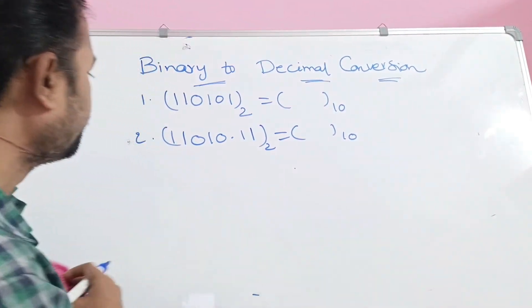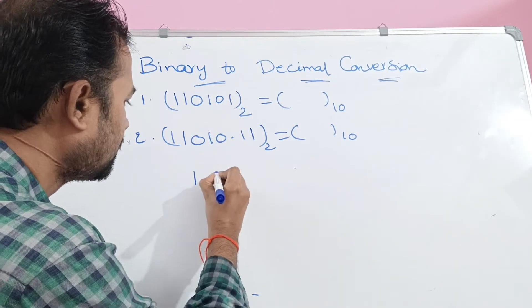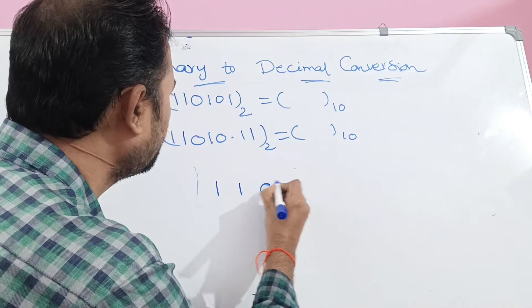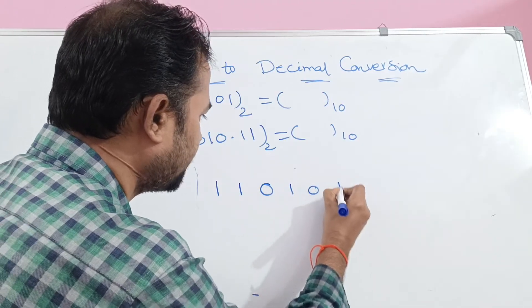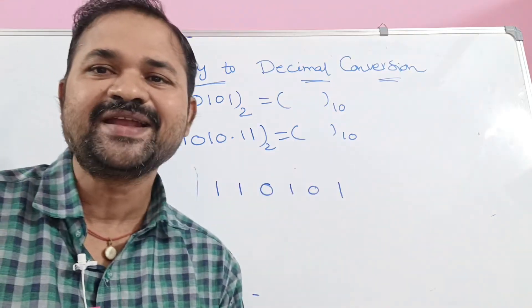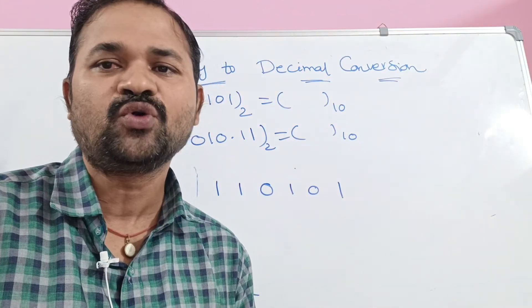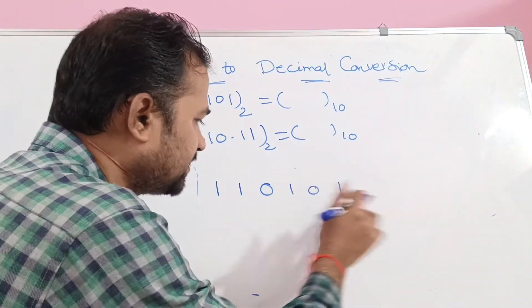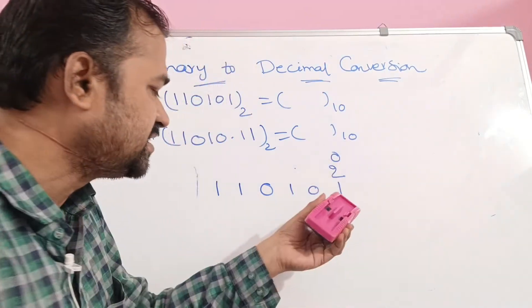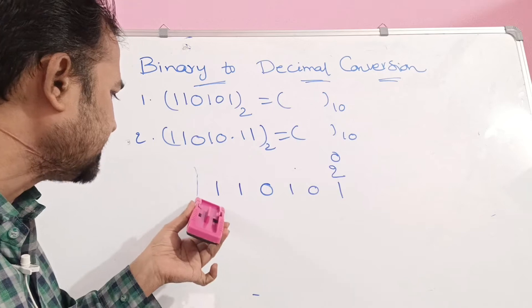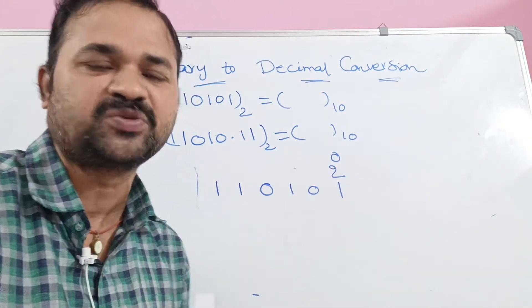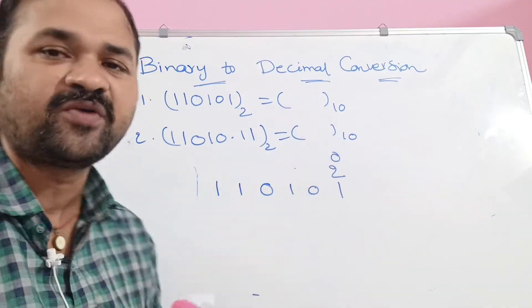The first binary number is 1101011. Binary means base 2, so on top of these numbers we have to write the powers of 2. This leftmost bit and this rightmost bit — the rightmost bit corresponds to 2 power 0.